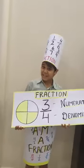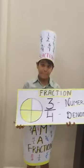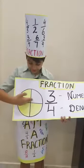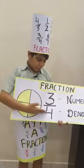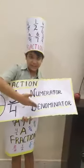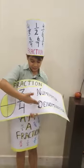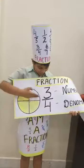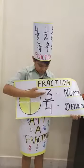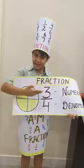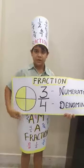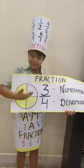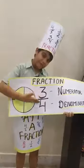Now let's take an example. This circle is divided into 4 parts, so 4 is the denominator. And out of 4, three parts are shaded, so 3 is the numerator. So the fraction of the shaded part will be 3 by 4.